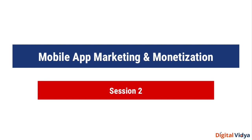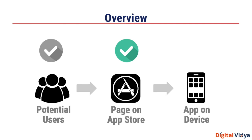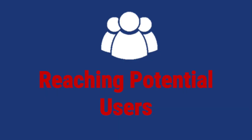Welcome to session two of the mobile app marketing course by Digital Vidya. In the last session, we had broken down app marketing into three broad areas: getting your potential users aware about your app, getting them to the app store and convincing them to install the app, and once the app is installed, getting them to use it. We covered the second part last session — setting up your app listing and app store optimization. In today's session, we're going to look at how to reach your potential users and drive awareness and interest about your app.